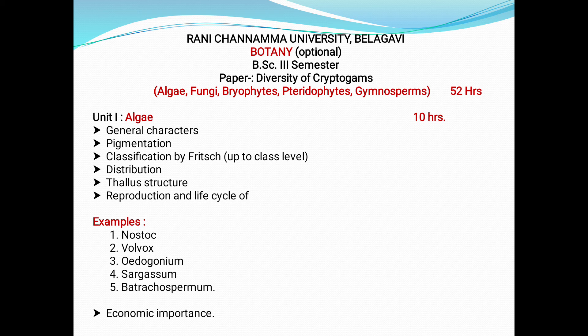Ten hours are allotted for Unit 1, that is algae. Algae are photosynthetic organisms that possess photosynthetic pigments such as chlorophyll. However, they lack true roots, stems and leaves characterized by vascular plants. Some are unicellular and others are multicellular. The scientific study of algae is called phycology.